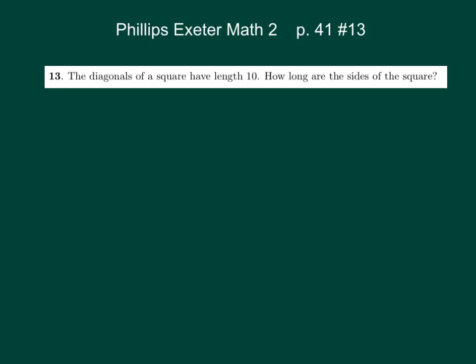We're looking at homework problem number 13 from page 41 of our Phillips Exeter Math 2 problem set. The diagonals of a square have length 10. How long are the sides of the square? This is an interesting problem in that there are a ton of different ways you can do it. Let's start with one way.